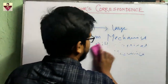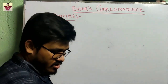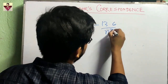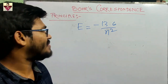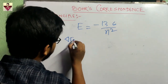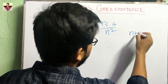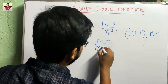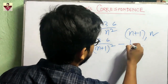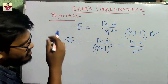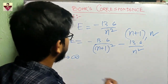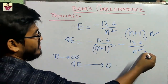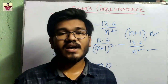Now if you apply this principle to the hydrogen atom, you can easily check that this principle holds good. For the hydrogen atom, the energy is E = −13.6 / n² eV, so energy is inversely proportional to the square of the principal quantum number. Now if you take the energy difference ΔE between two consecutive levels n+1 and n, it becomes −13.6/(n+1)² − (−13.6/n²). Now if you take the limit as n → ∞, ΔE tends to zero.